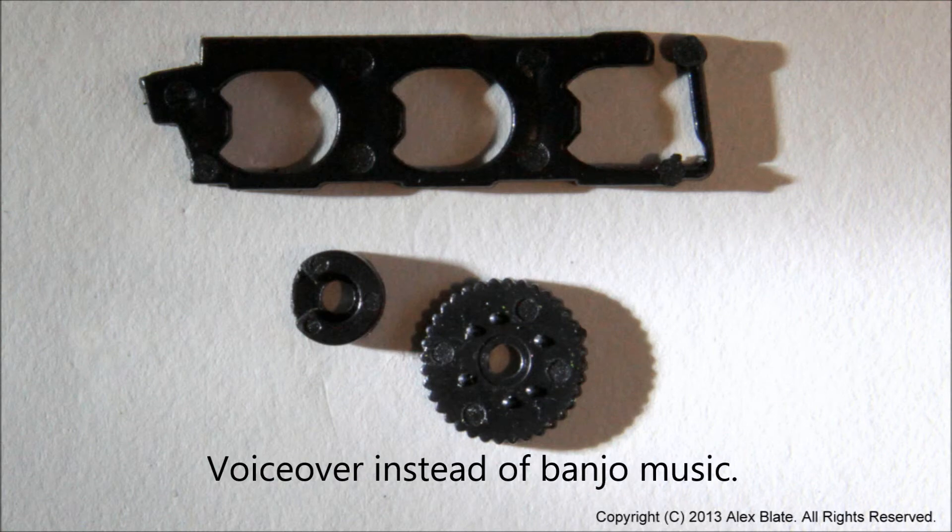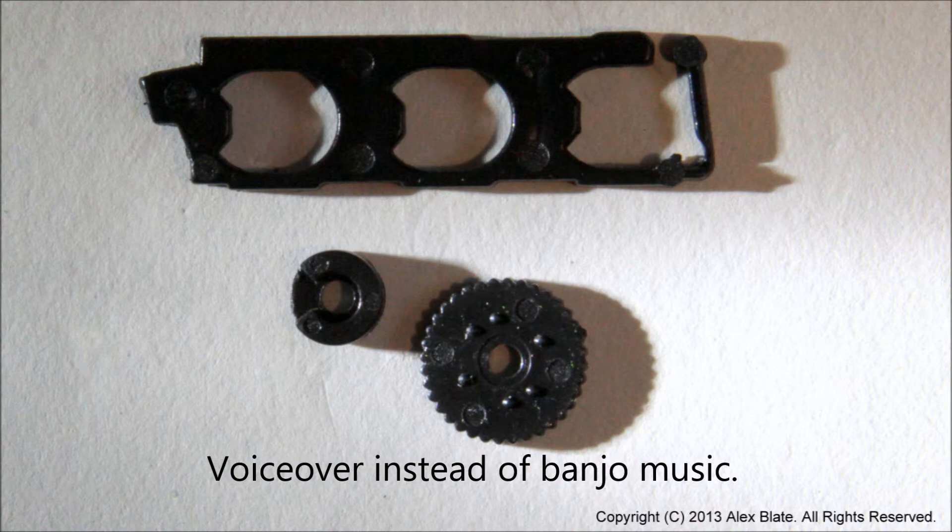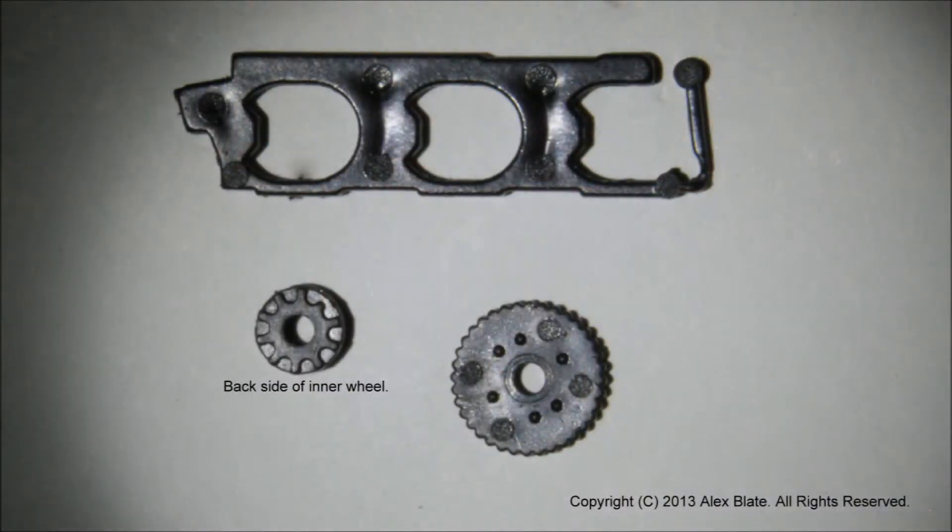So here's a close-up of the actuator, the inner and outer wheels. And you can see the little C-shaped gate on the inner wheel and the little bumps on which the interface. In this photograph, I've inverted the inner wheel so you can see the back of it and the little tines that interact with the bumps on the outer wheel.